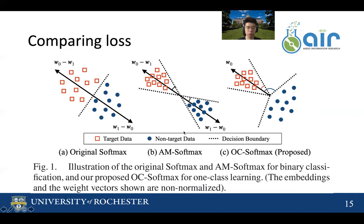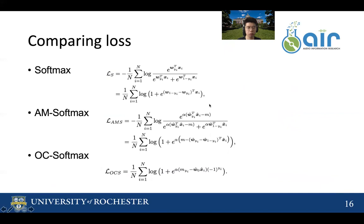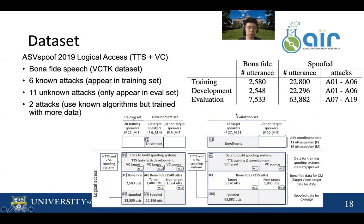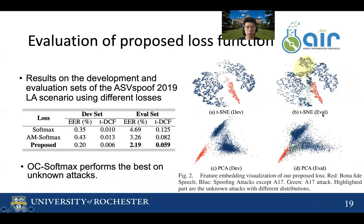This figure compares our proposed OC softmax with the original softmax and AM softmax, and the formulas can also be compared. For our experiments, we conduct them on the ASV Spoof 2019 LA dataset. It includes bonafide speech from the VCTK dataset. The training set includes six known attacks. For the evaluation set, it includes 13 unknown attacks, where two attacks are similar to known algorithms but trained with more data, making them more difficult. The distribution of utterances is shown here.